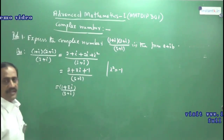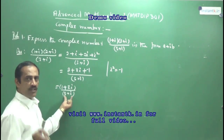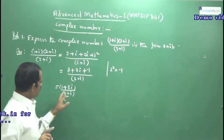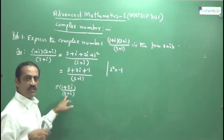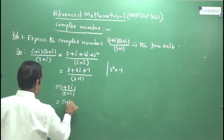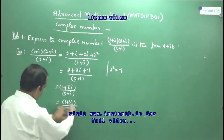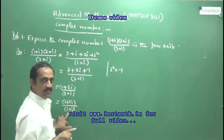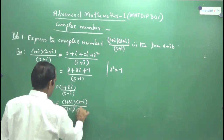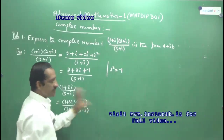Now, when there is more than one term, put brackets. Next, take the conjugate of the denominator. The conjugate of 3 + i is 3 − i. Conjugate means just changing the sign — instead of plus you write minus, and vice versa. So we have (1 + 3i) divided by (3 + i), and we multiply numerator and denominator by (3 − i). Always practice putting brackets, otherwise you won't get the correct answer. Writing each step clearly is very important.